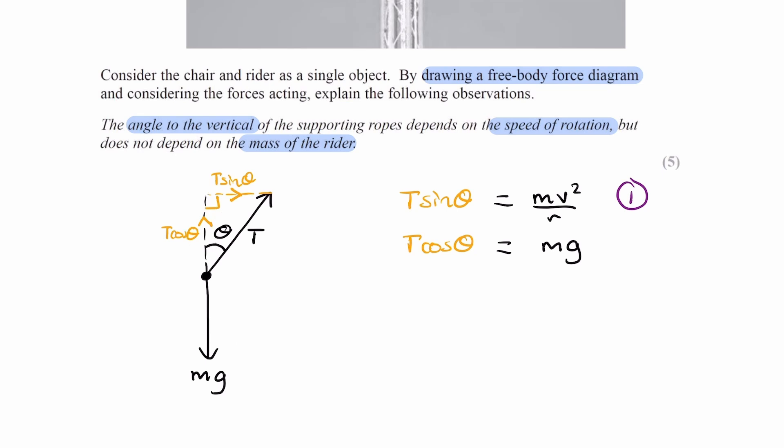Now, what we can do here is we can divide the two equations by each other. So if you do all of equation 1 all over equation 2, the left-hand side becomes T sin theta over T cos theta, and the right-hand side becomes mv squared over r over mg.